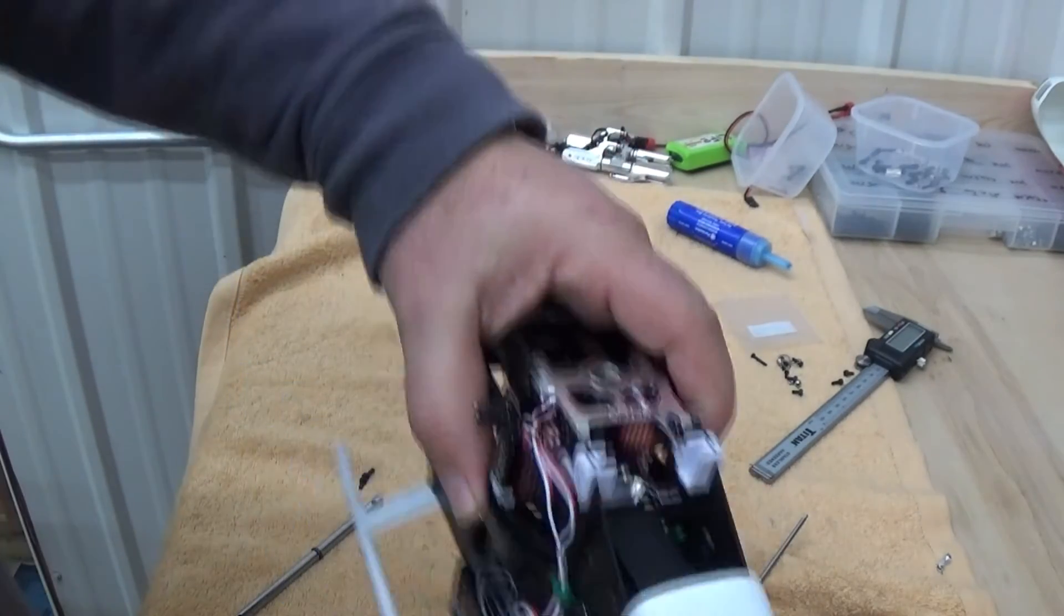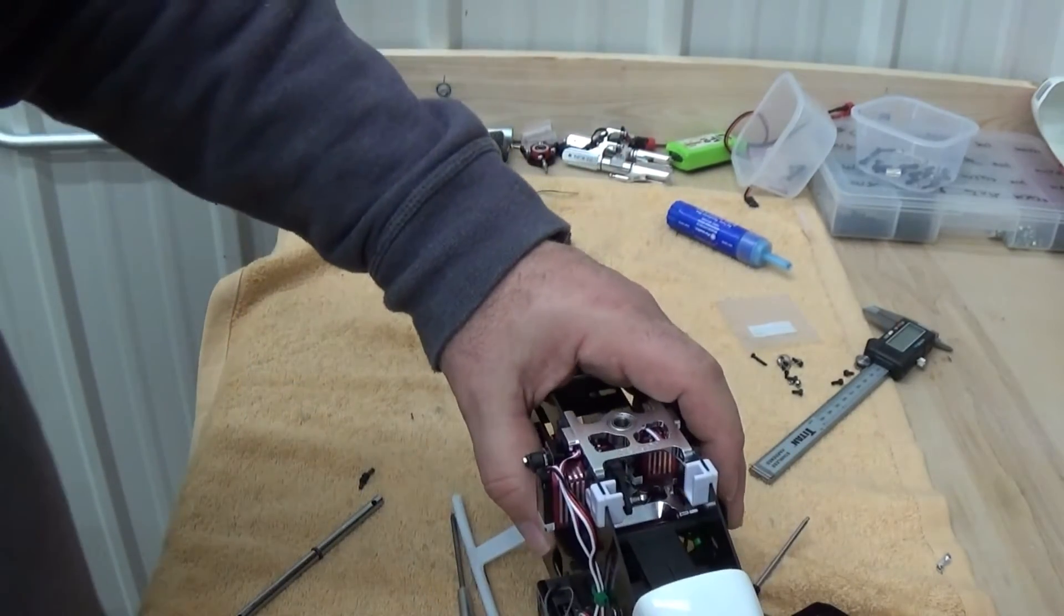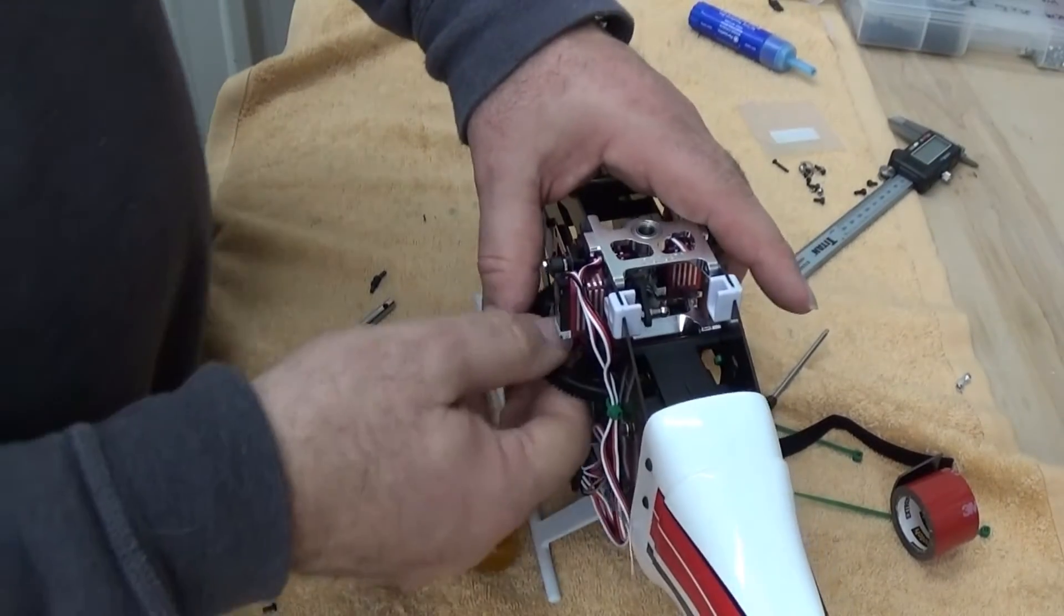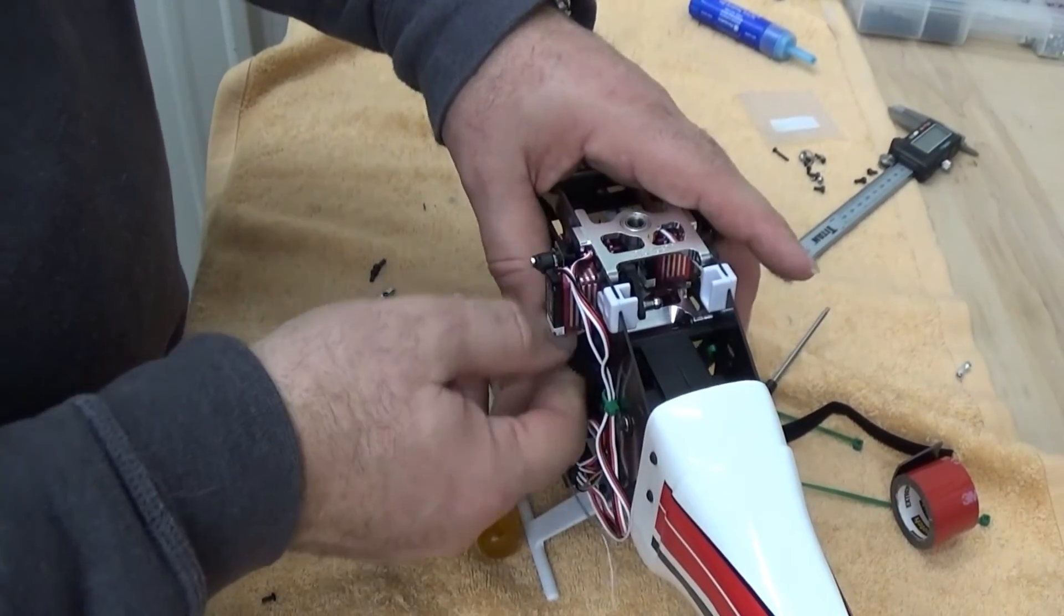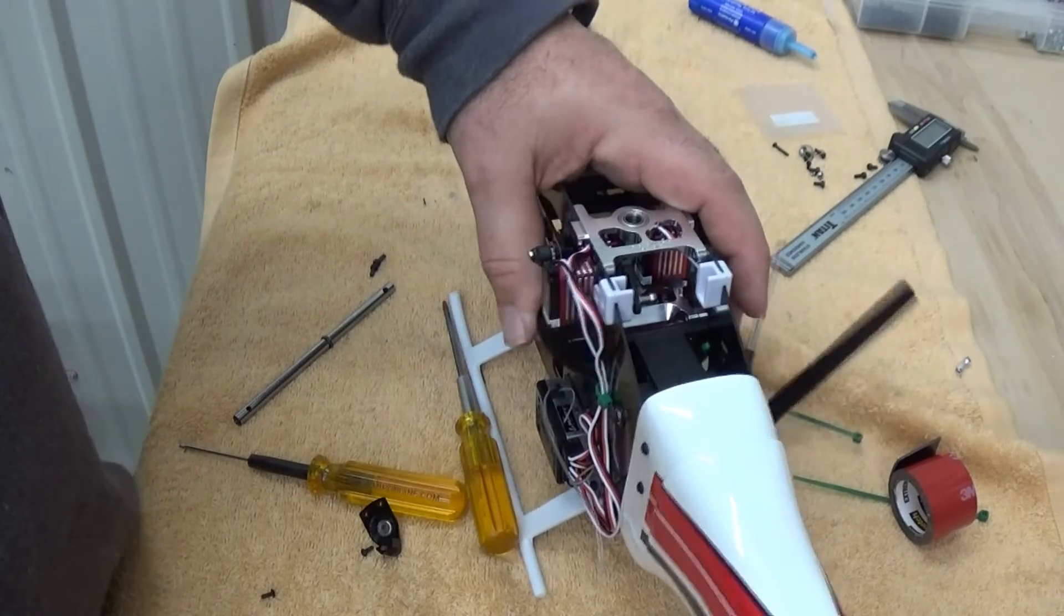That was actually fairly straightforward. I was able to slide the belt in, bring the belt off to the side, flip it over the top of the gear and bring the whole piece forward.